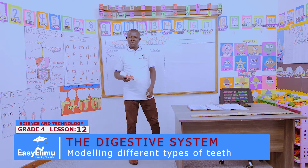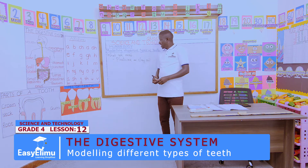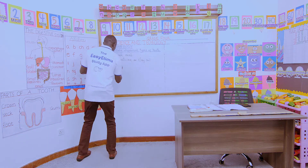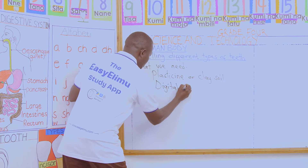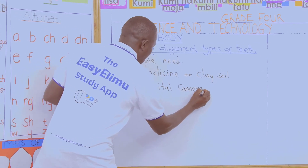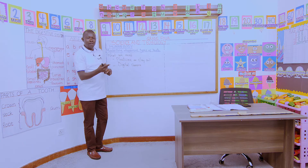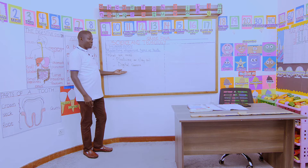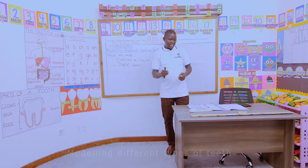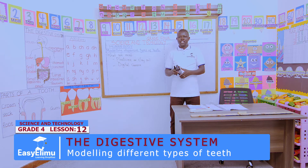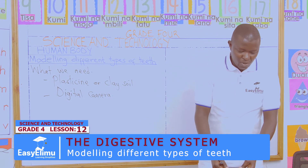Can you show in your groups what you brought? Clay soil is also good. We also need a digital camera. Why? After we model the types of teeth, we'll take photos, go and print them, and mount them in our portfolio. The digital camera is very important. In my case, because I didn't have a digital camera, I brought my phone — it has a digital camera. So I'll use my phone to take photos of the teeth I model.